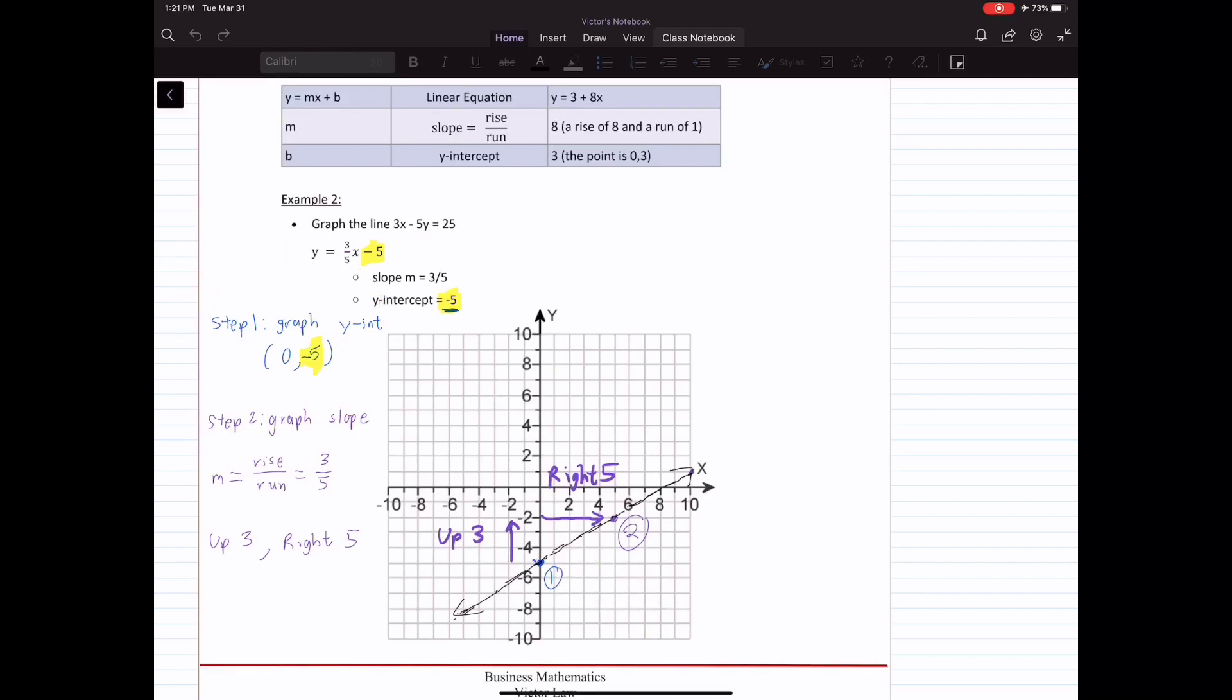Once we have graphed the y-intercept, we need to start graphing the slope. The slope represents rise over run, so your slope is 3 over 5. What that means is that when we increase x by 5, y will increase by 3.